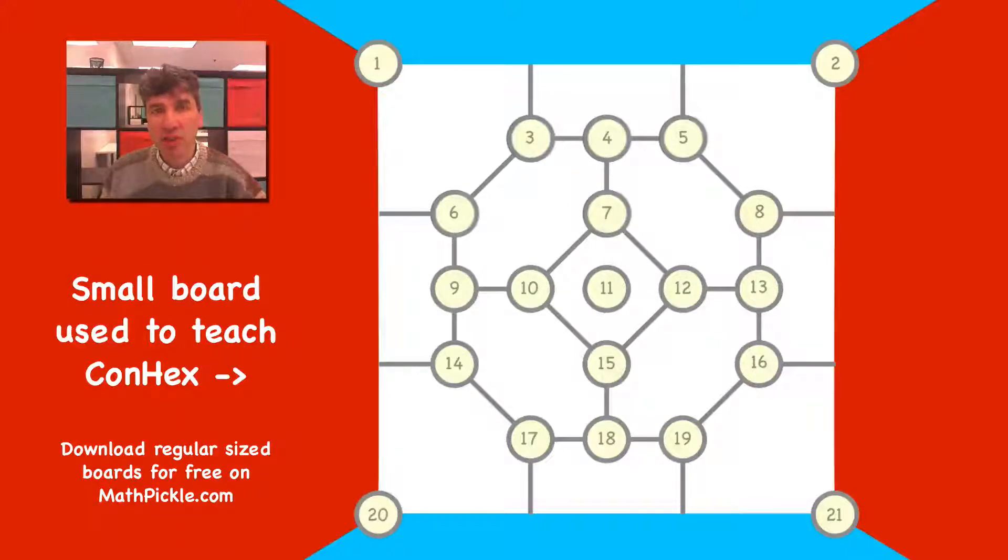ConHex is a great game to play with students learning about perimeter and geometric shapes. Turns alternate between red and blue. Whenever a shape gets at least half of its perimeter colored one color, then that shape turns into that color.